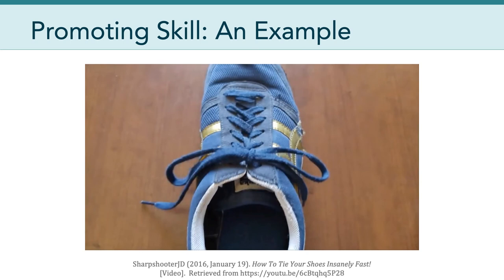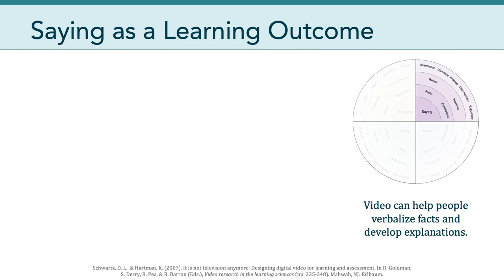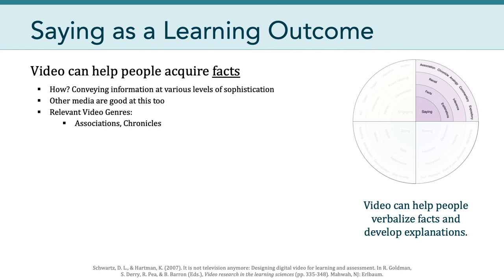This is a strong example of a video meant to help someone learn a new skill or advance an existing one. The final quadrant of the map focuses on saying as a learning outcome — the idea that video and other media can help people verbalize facts and develop explanations. Video can help people acquire facts by conveying information at various levels of sophistication, using genres like associations or chronologies. The example Schwartz and Hartman use is Sesame Street, which routinely paired entertaining images with names to help children memorize numbers and letters. Chronicles such as news broadcasts also deliver facts embedded within the context of a larger story.